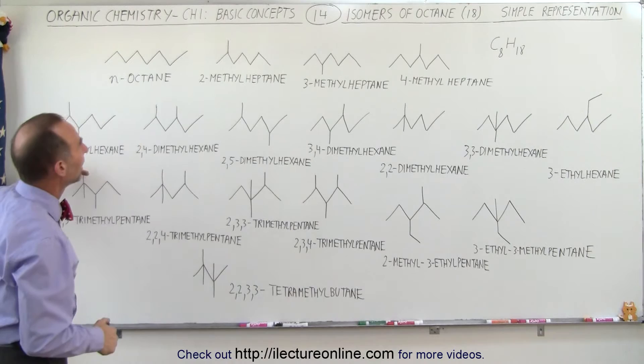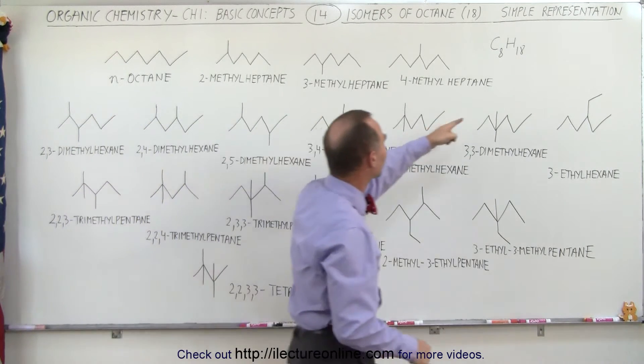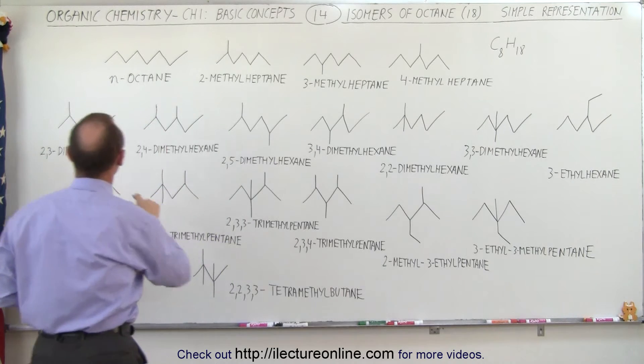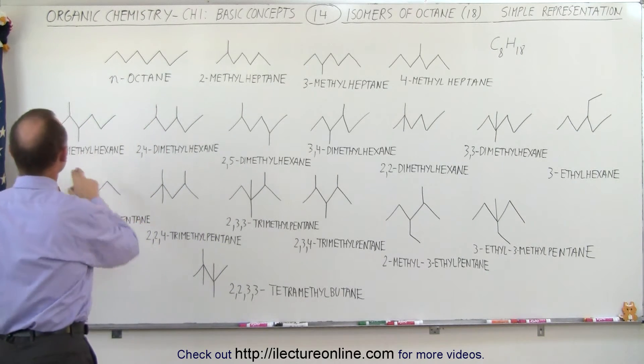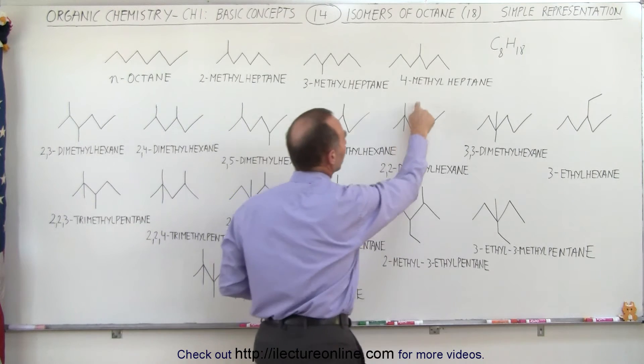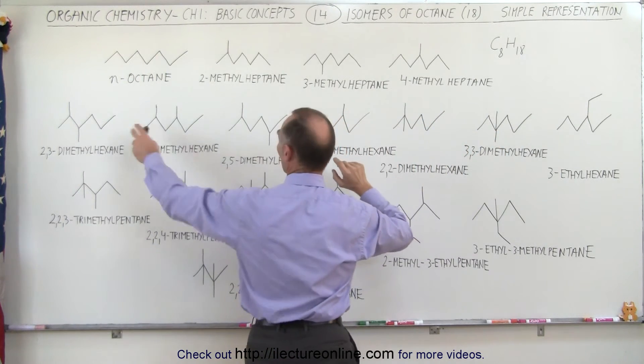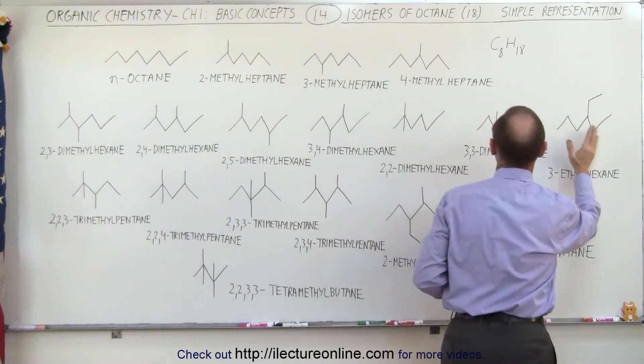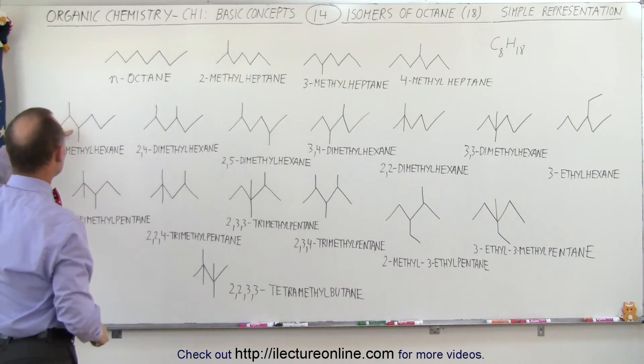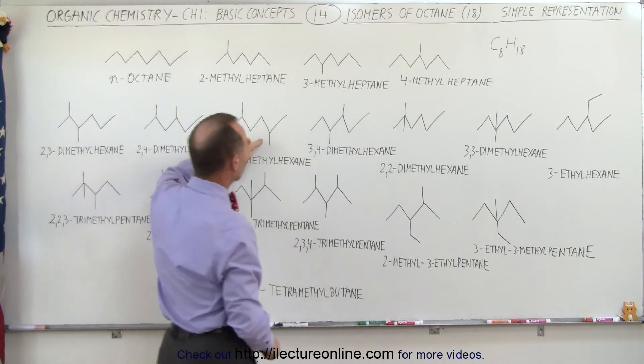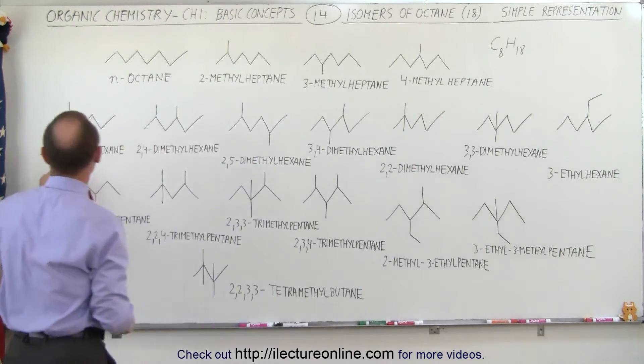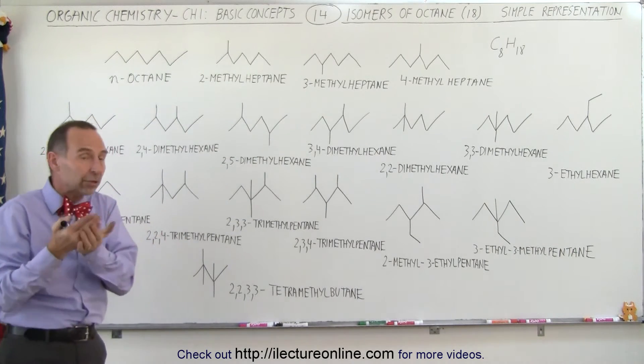Going to the next set of isomers, notice now we have one, two, three, four, five, six, seven—all with a chain of six carbons, so they end in hexane in each case. These have two methyl groups on each structure. There's only one with an ethyl group; the other six all have methyl groups, they all have two of them. One connected to the second carbon, one to the third, second and fourth, second and fifth, third and fourth, second and second, third and third. All are called dimethylhexane. The numbers indicate where the methyl groups are connected.